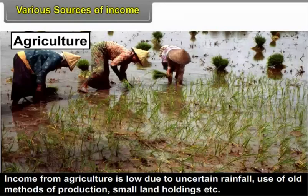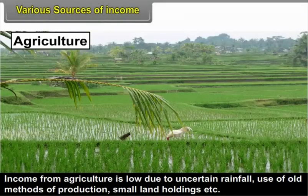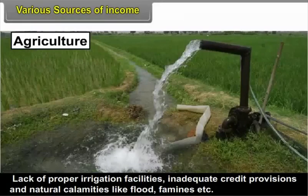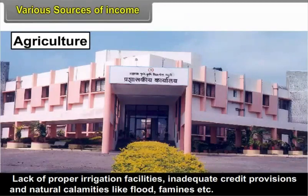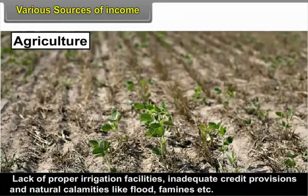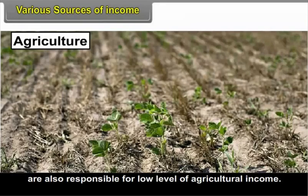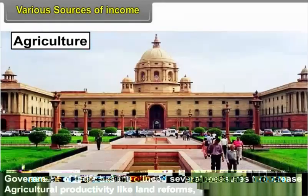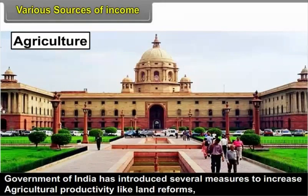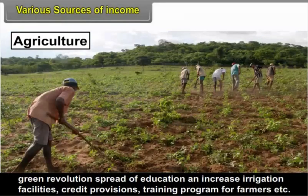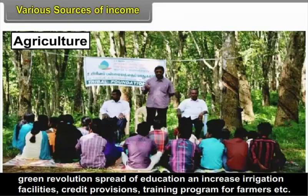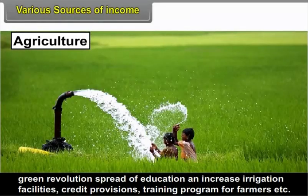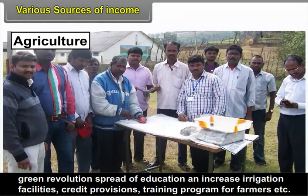Income from agriculture is low due to uncertain rainfall, use of old methods of production, small land holdings, lack of proper irrigation facilities, inadequate credit provisions, and natural calamities like floods and famines. The Government of India has introduced several measures to increase agricultural productivity like land reforms, green revolution, spread of education, increase in irrigation facilities, credit provisions, and training programs for farmers.